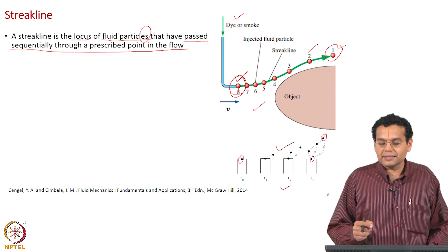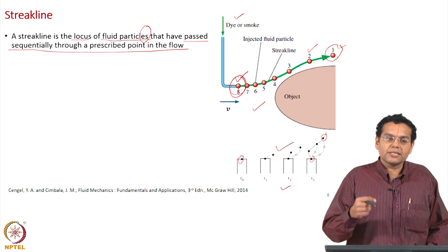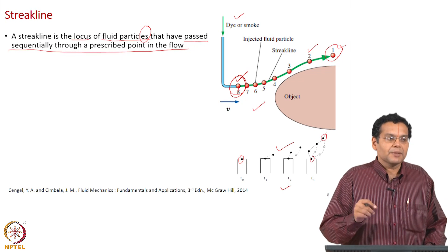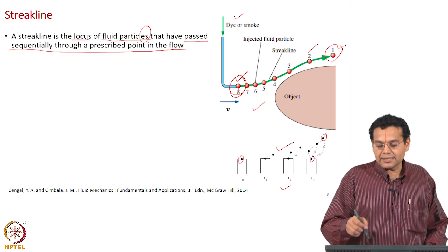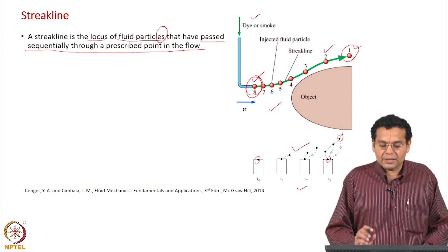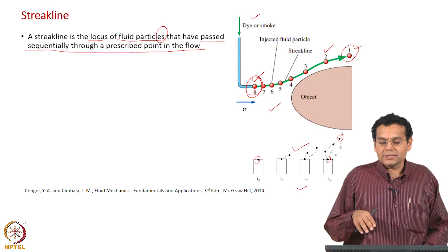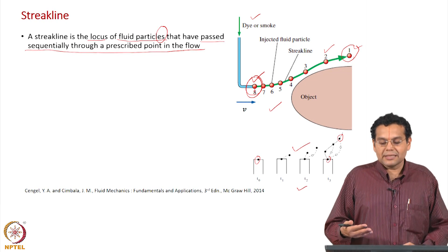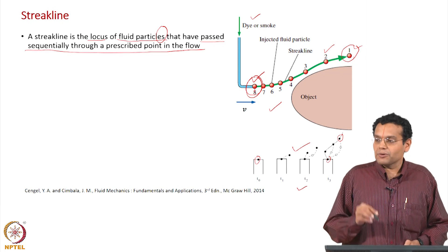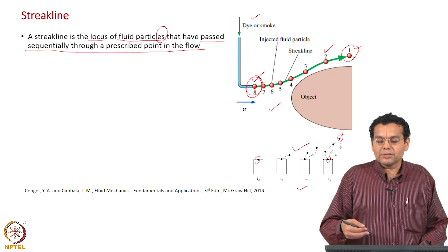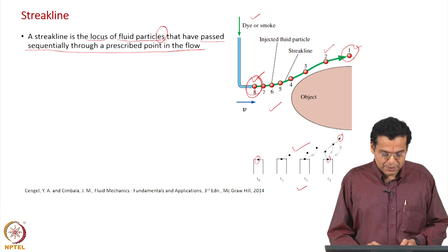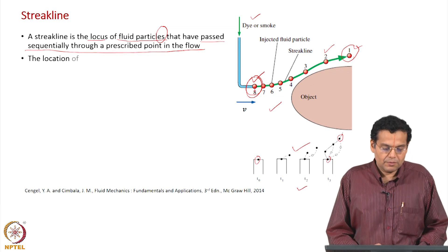Streak lines are important because what we actually measure is a streak line. You will shortly see that for the steady-state case, streak lines also coincide with path lines and streamlines. So it is equivalent to measuring a streamline. In a steady-state case, because the flow is steady and all these coincide with each other, measuring a streak line means the streak line becomes equivalent to the streamline — so you can more casually say you are measuring a streamline, but not precisely.